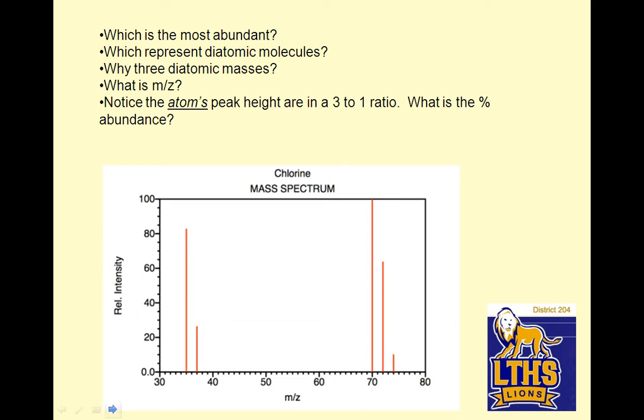So what's the most abundant thing here? So in this case, the most abundant thing, see the relative intensity? The most abundant thing, if I were to label these A, B, C, D, E. So the most abundant would be C, because the intensity is the most, which represents diatomic molecules.